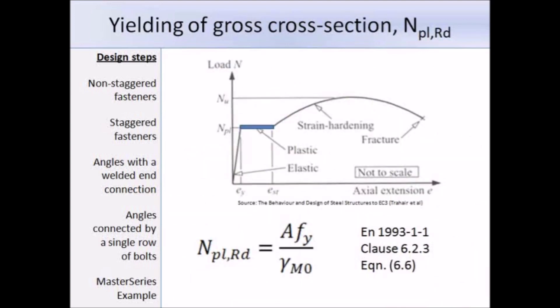First we look at the design plastic resistance of the gross cross-section N_pl,Rd. The expression is given in clause 6.2.3 as equation 6.6: the design plastic resistance equals the gross area times the yield strength over the partial factor γM0. The axial extension increases linearly with load until the yield stress is reached — this is the general yield load where N_pl equals A times fy. After this point, extension increases without any increase in load as the steel begins to act plastically.